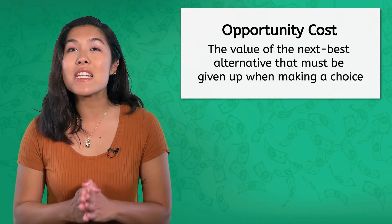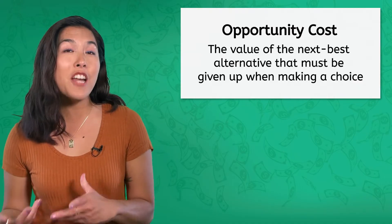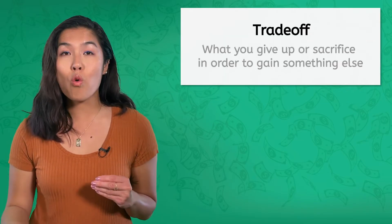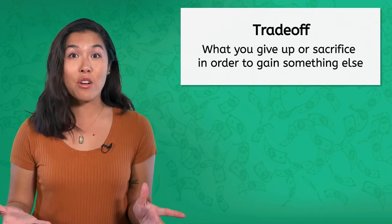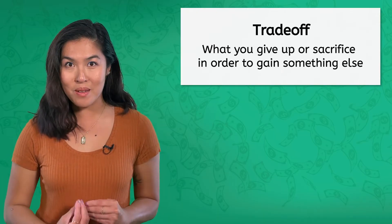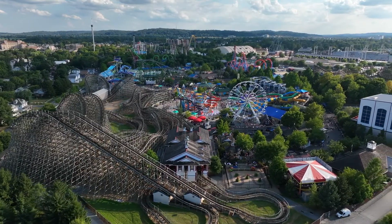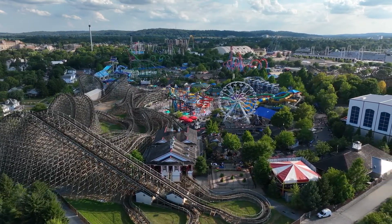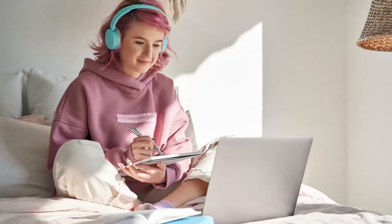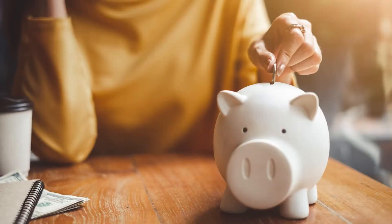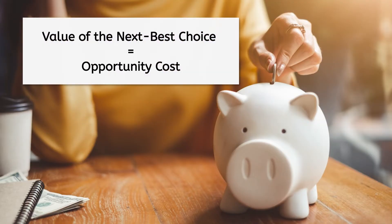So what is opportunity cost? It's the value of the next best alternative that must be given up when making a choice. Another way to think of it is as a trade-off — what you give up or sacrifice in order to gain something else. Let's circle back to our original example: your contest prize money. You went ahead and bought those amusement park tickets, but what did you give up? Well, you could have saved that cash for a new computer instead. Saving was your next best choice, and the value of that choice is your opportunity cost.